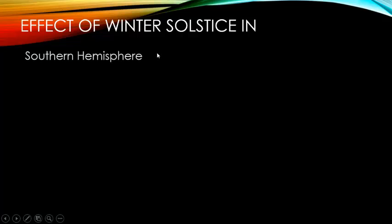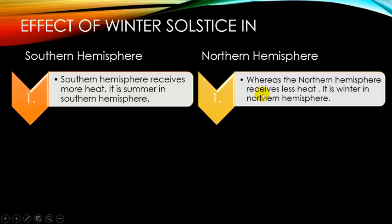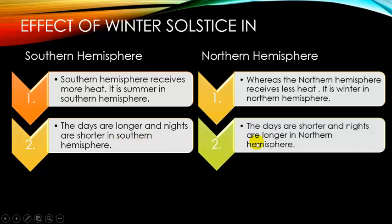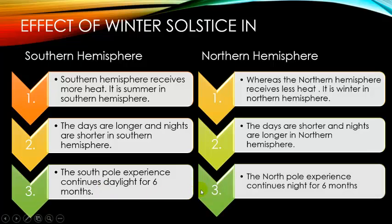Effects of winter solstice: The Southern Hemisphere receives more heat, so it is summer in the Southern Hemisphere. The Northern Hemisphere receives less heat, so it is winter in the Northern Hemisphere. The days are longer and nights are shorter in the Southern Hemisphere, while days are shorter and nights are longer in the Northern Hemisphere. The South Pole experiences continuous daylight for six months and the North Pole experiences continuous night for six months.